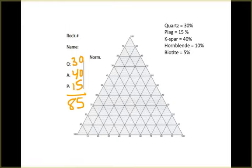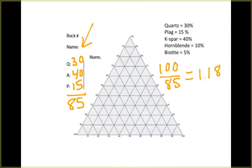We have to normalize. To do that, we need to multiply by some factor to make those percentages add up to 100%. So we'll take 100, divide that by 85, to get 1.18. That's the factor that we need to multiply those values by in order to get those totals to add up to 100.